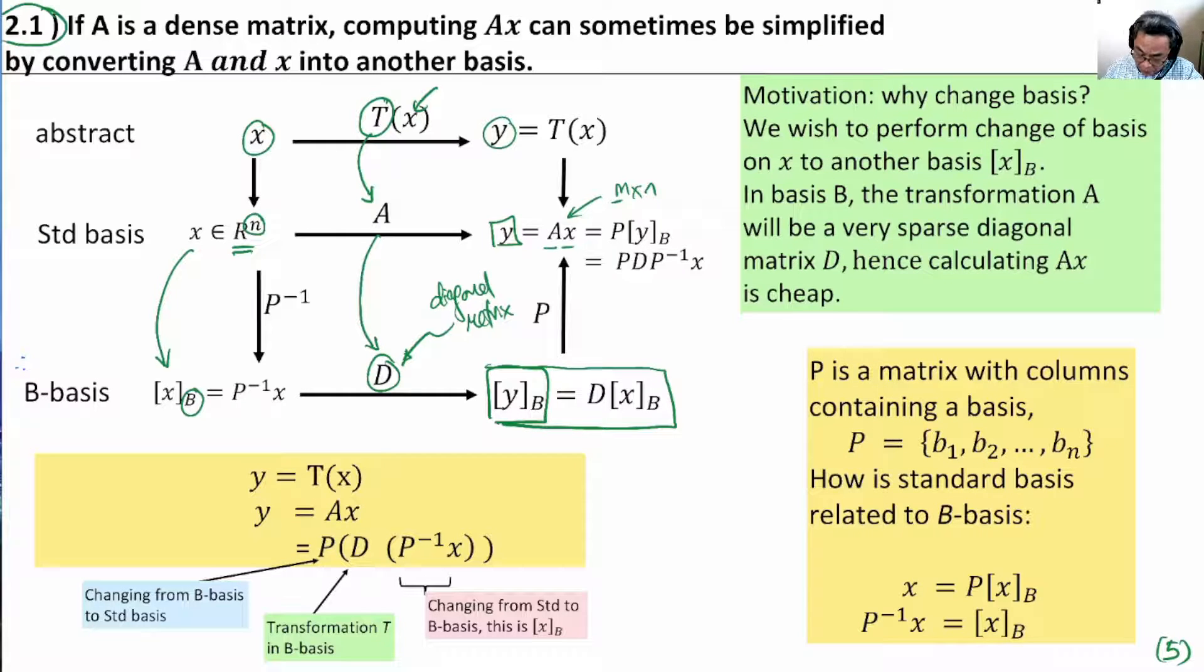Now, let's remember how we convert from the standard basis to the B basis. We take the input X in the standard basis, and we pre-multiply on the left by P^(-1), where P contains the columns of the basis representing the B basis. So, X of B is generated by P^(-1) times X in the standard basis.